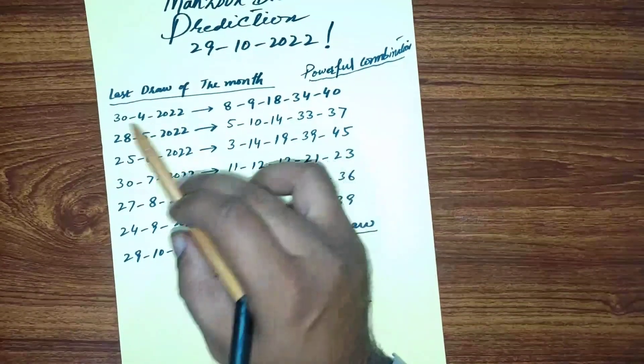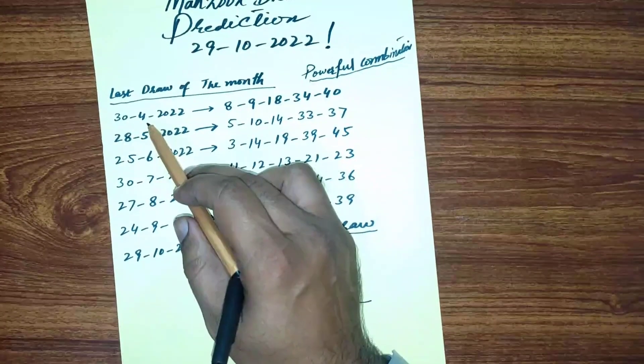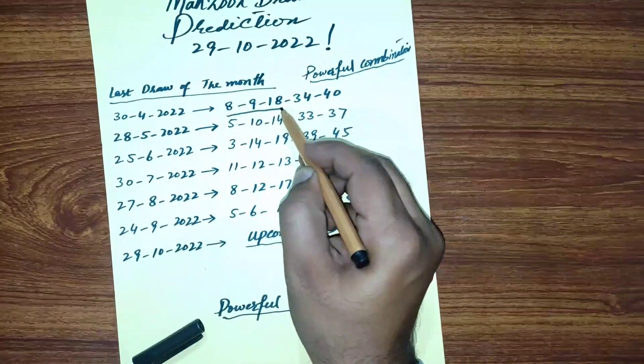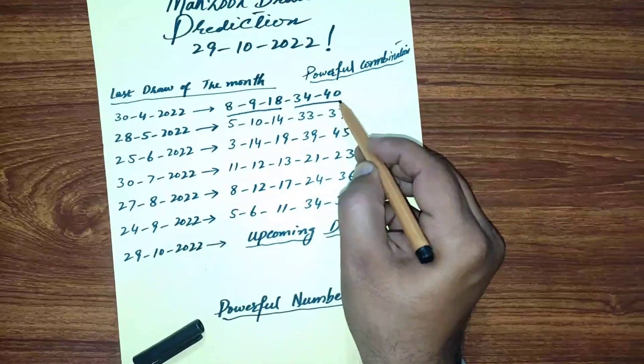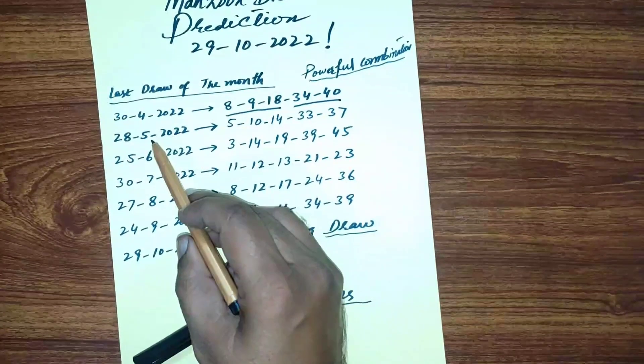These are the past results of the last draw of the month, starting from April. It is the last draw of April. You can see three numbers from 1 to 19 they picked, and two numbers from 20 to 49. In the next month, May's last draw, again three numbers from 1 to 19 and two numbers from 20 to 49.